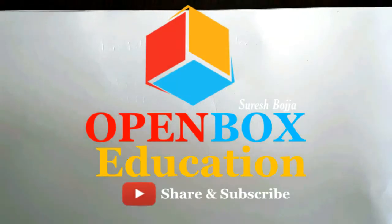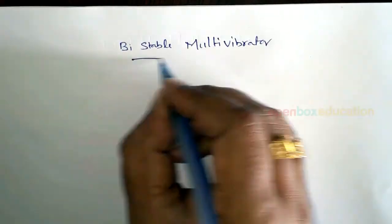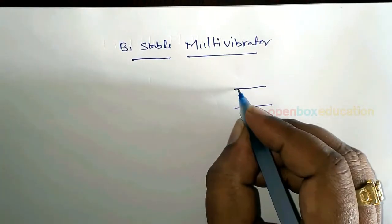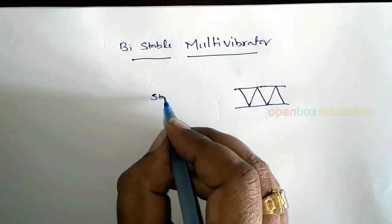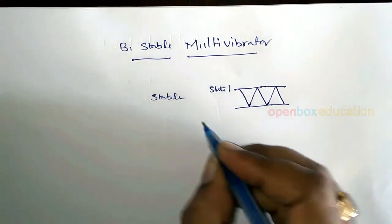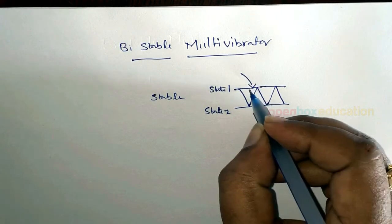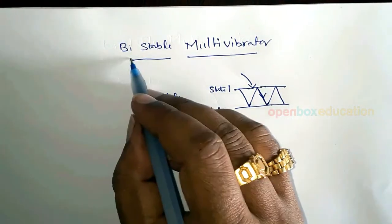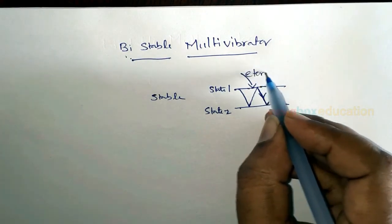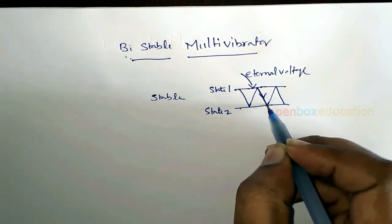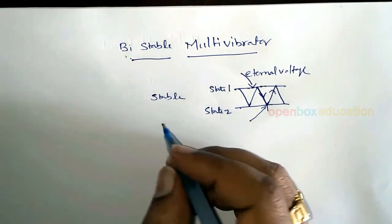Good morning, myself SRK, EC department. Today I am going to explain about bistable multivibrator. Multivibrator means it has two states and is changing from one state to another state multiple times. Stable means a state is said to be stable when a trigger is applied — then only it changes. Bi means two, so both states are stable states. By applying external voltage it changes from one state to another, and again we apply external voltage to change back.